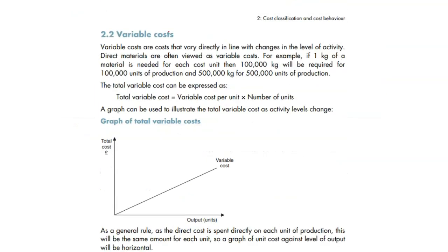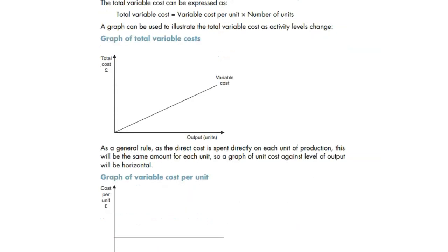Next one is variable cost. The more items you produce, the more it costs you. It varies with the level of activity. For example, if 1 kg of material is needed for each cost unit, then 100,000 kg will be required for 100,000 kg of production. The more you produce, the more kgs will be needed.